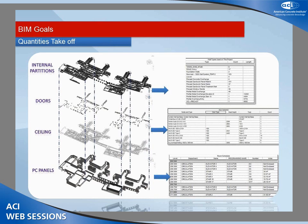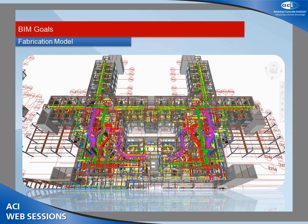For quantity takeoff, some of the things we targeted were interior partitions — very quick to grab all the square footages of chips, framing, and paint required for the job. We worked with consultants to make sure models were developed for that purpose so we could use them for quantity takeoff. Obviously doors, ceilings, and the precast concrete panels on the exterior of the building were also targeted.